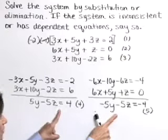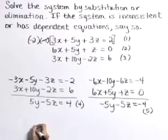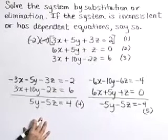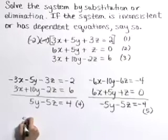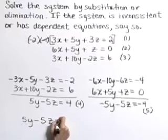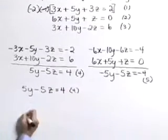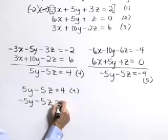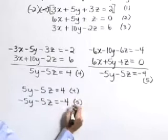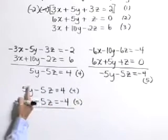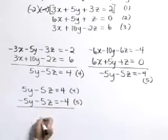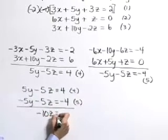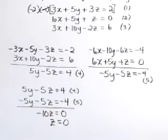Now let's focus on equations four and five and solve this system for either y or z using elimination. Rewriting equation four: five y minus five z equals four. Rewriting equation five: negative five y minus five z equals negative four. Adding these equations together, y eliminates, leaving us with negative ten z equals zero, or z equals zero.